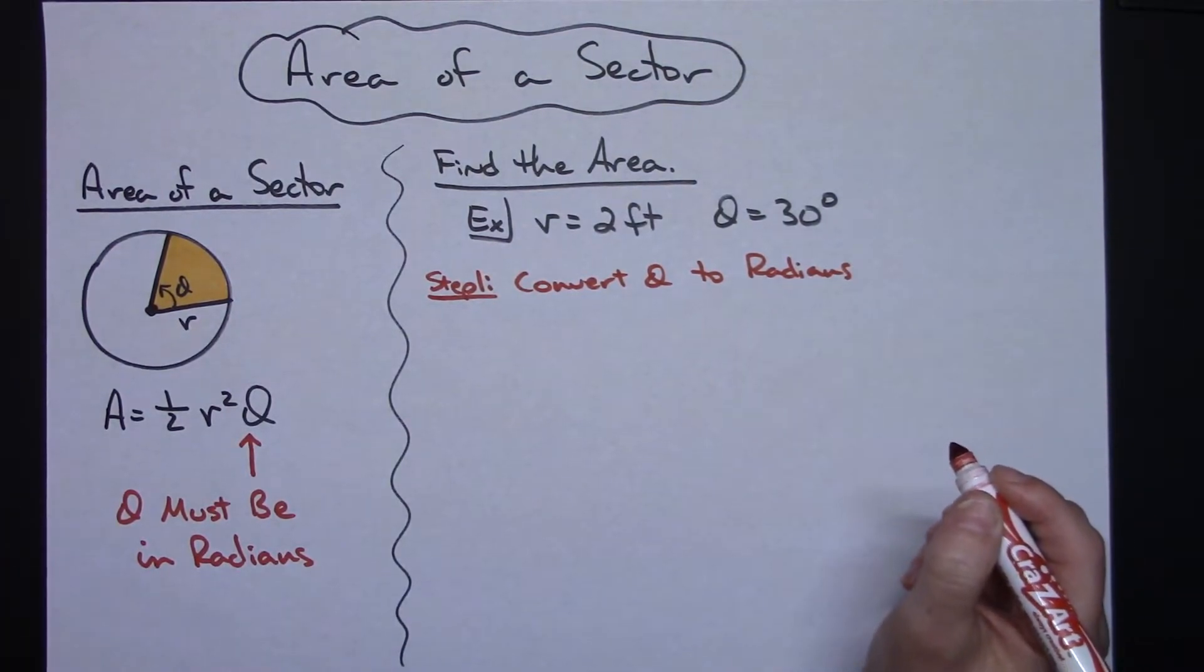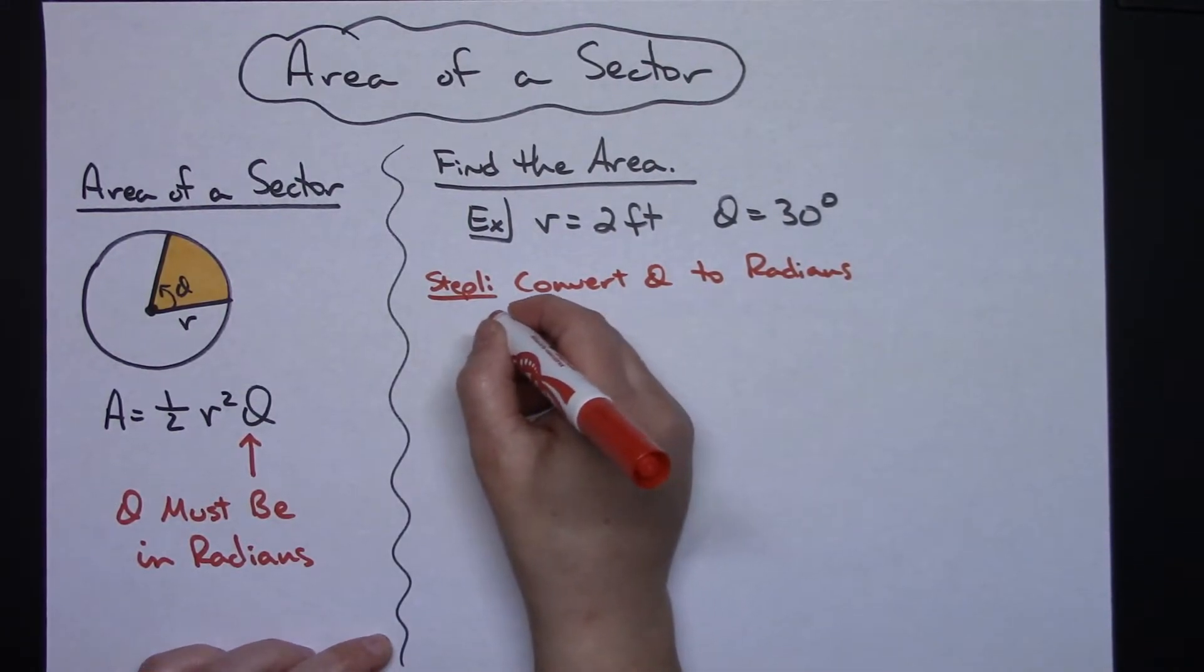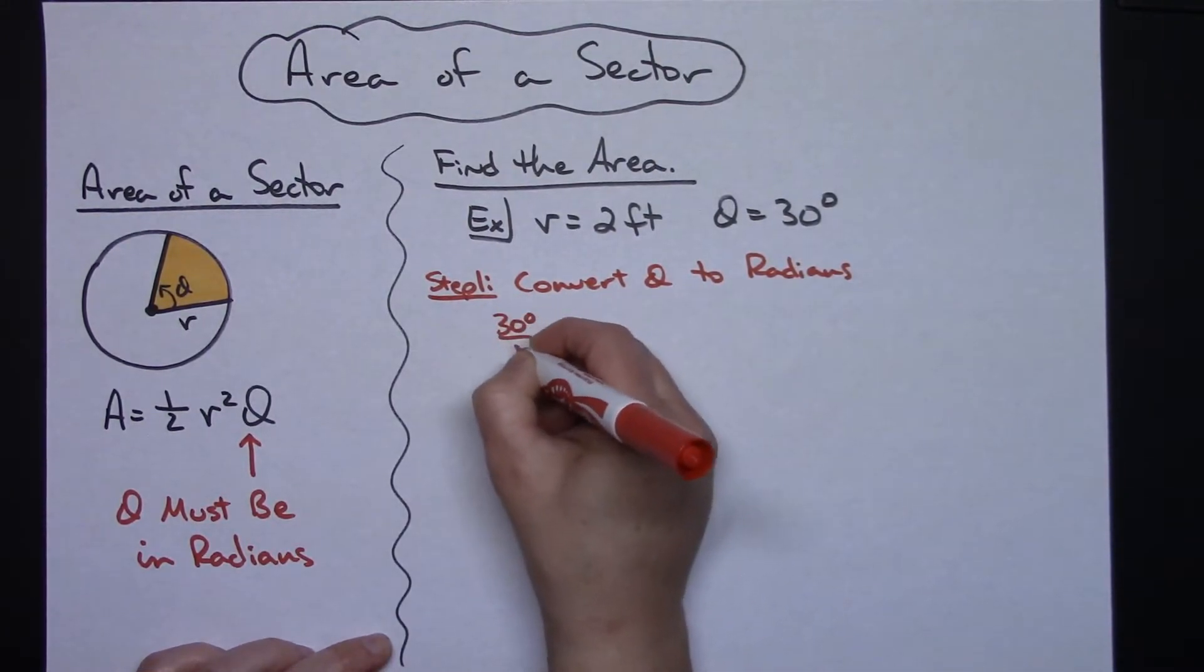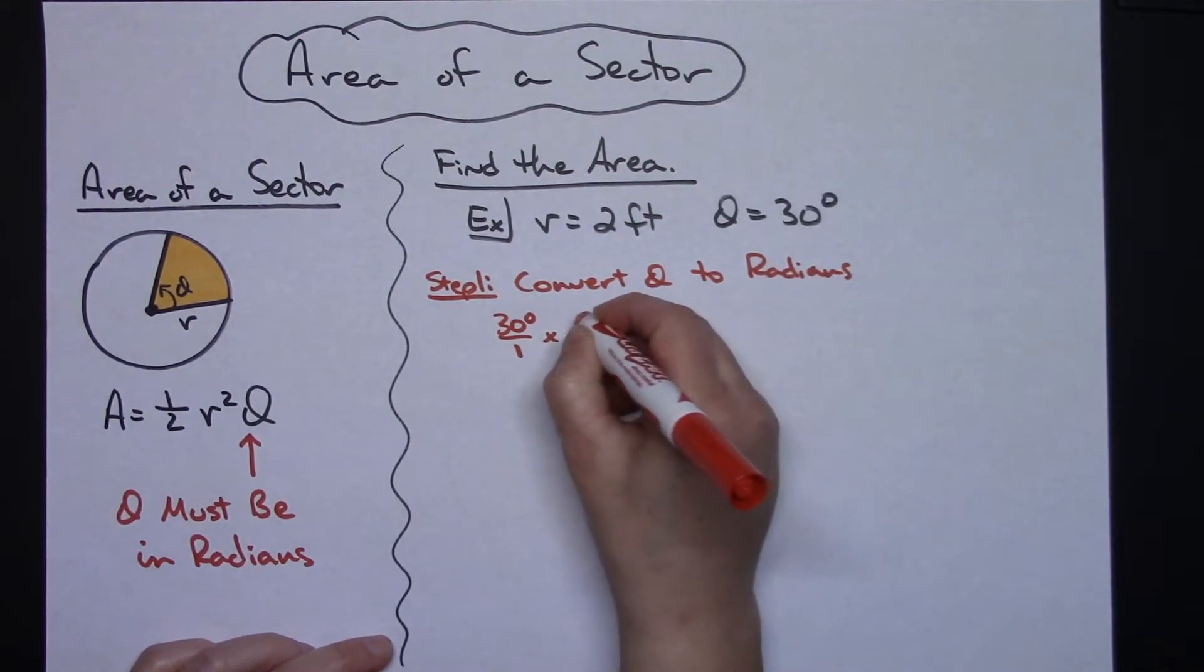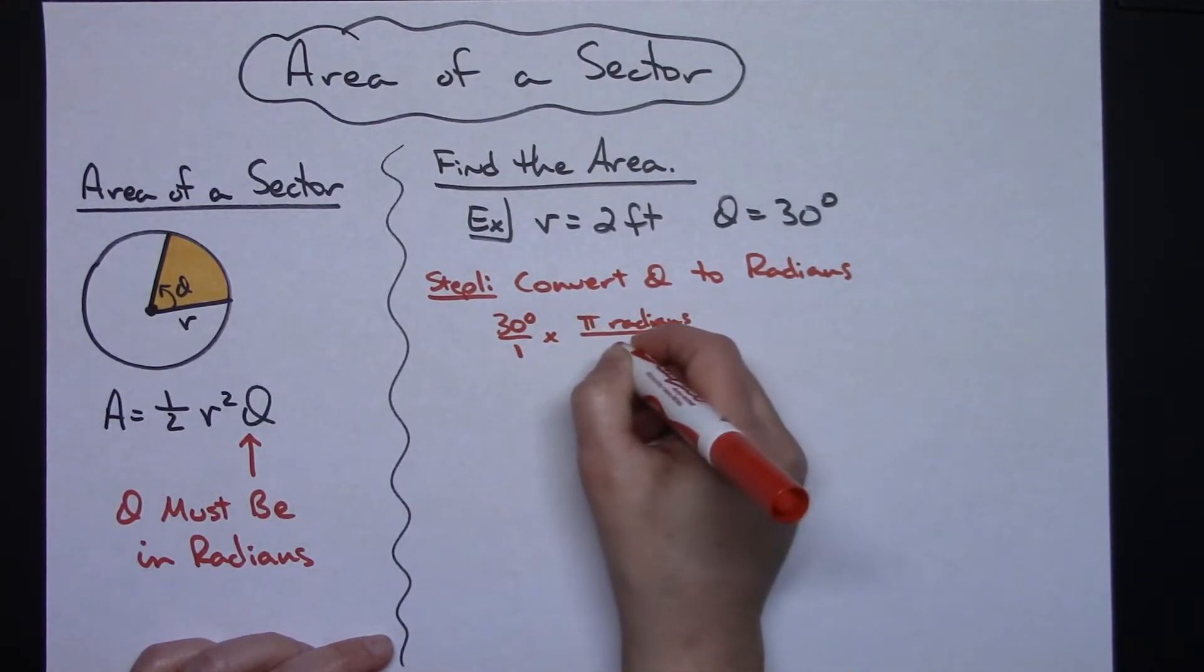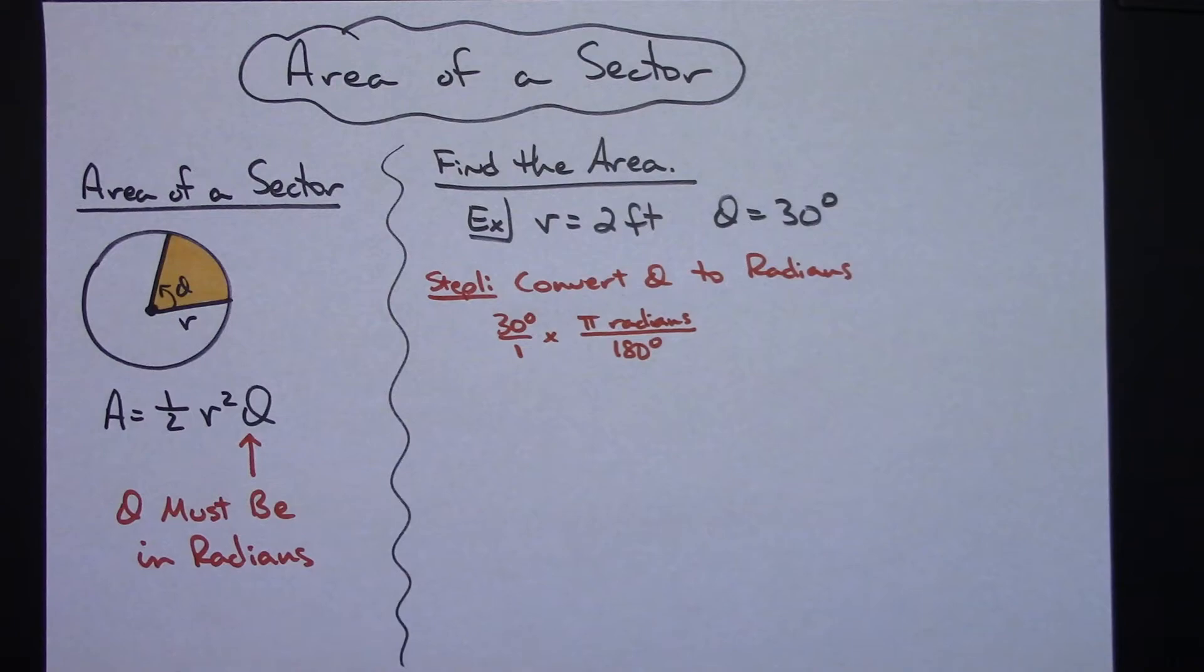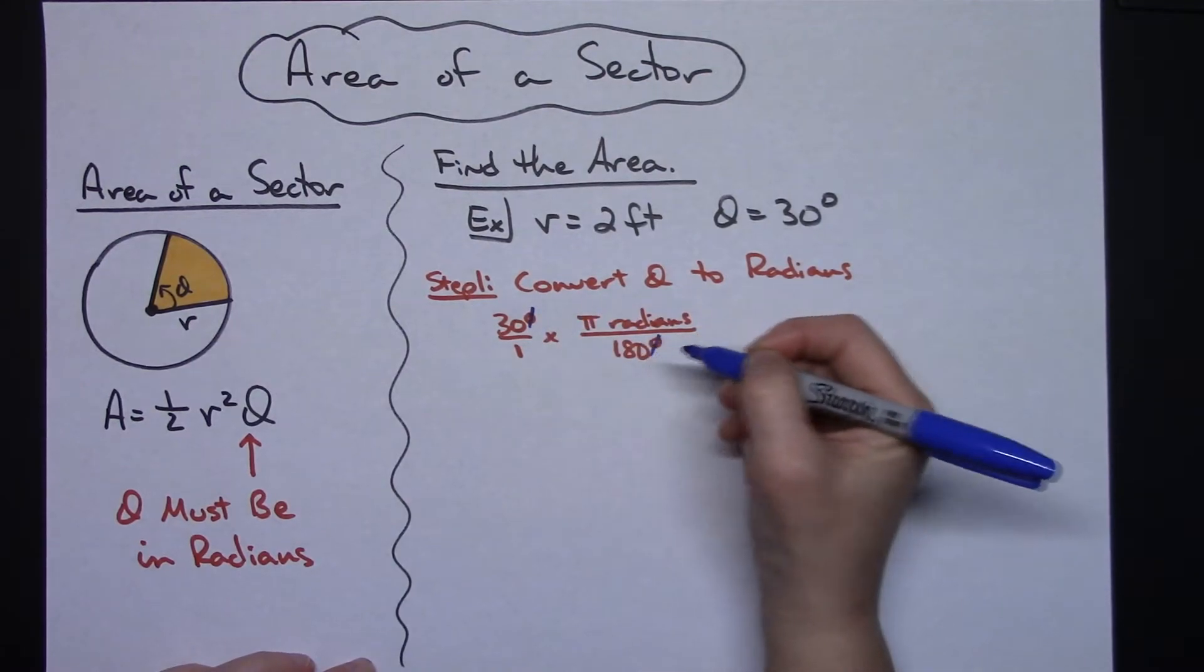Now I am assuming that you do have a little background in trig here and that this is a skill that you would know how to do. So 30 degrees over 1, and I'm going to multiply then by pi radians over 180 degrees because that's the conversion ratio that we use to convert degrees to radians. My degrees cross out.